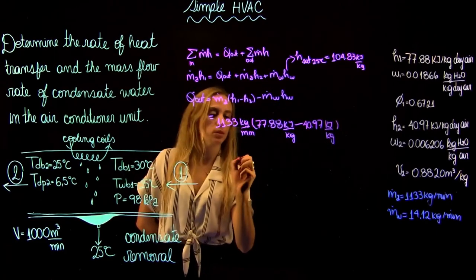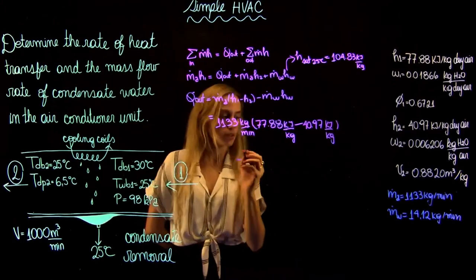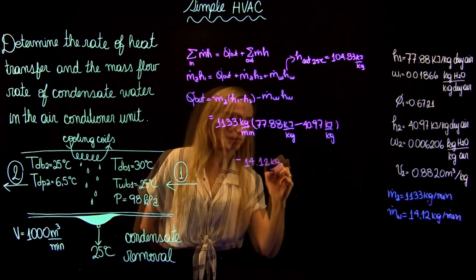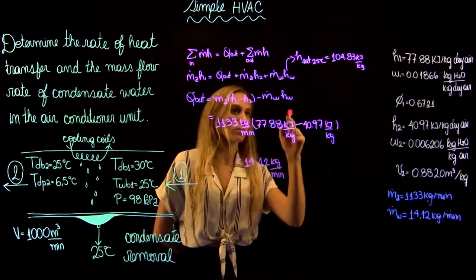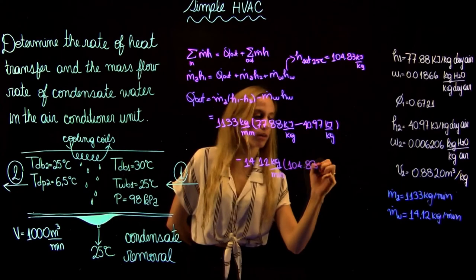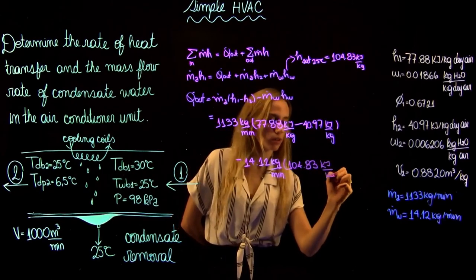I'm going to write the rest here, so it's going to be minus the mass flow rate of water, so it's minus 14.12 kilograms per minute, times the enthalpy of water, 104.83 kilojoules per kilogram.